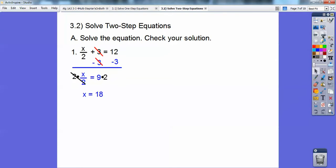Now it says check your solution. Let's go ahead and just mentally put 18 back up at the beginning problem. 18 over 2 is 9. 9 plus 3 equals 12, so the answer is 18.